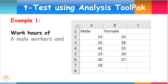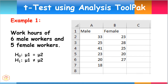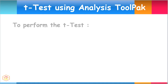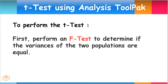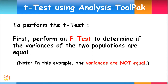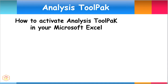For our first example, we will use data from work hours of six male workers and five female workers. The null hypothesis states that the means of both groups are equal, while the alternate hypothesis says they are not equal. To perform a t-test on the two samples, we must first perform an F-test to determine if the variances of the two populations are equal. In this case, the F-test result indicated that the variances are not equal.